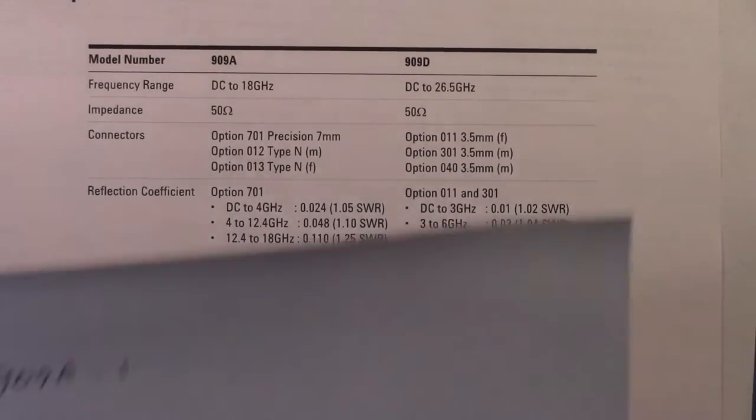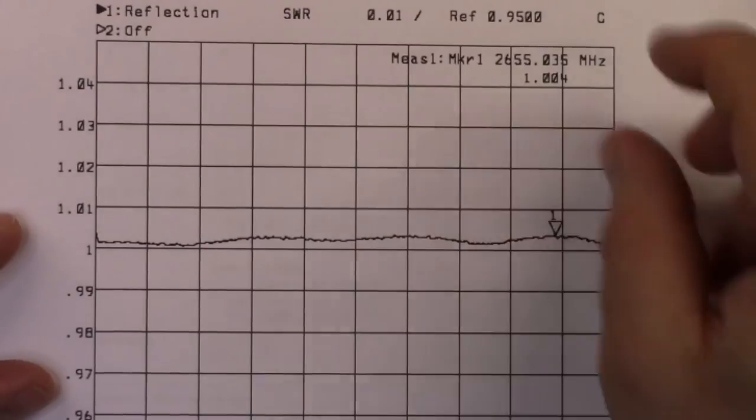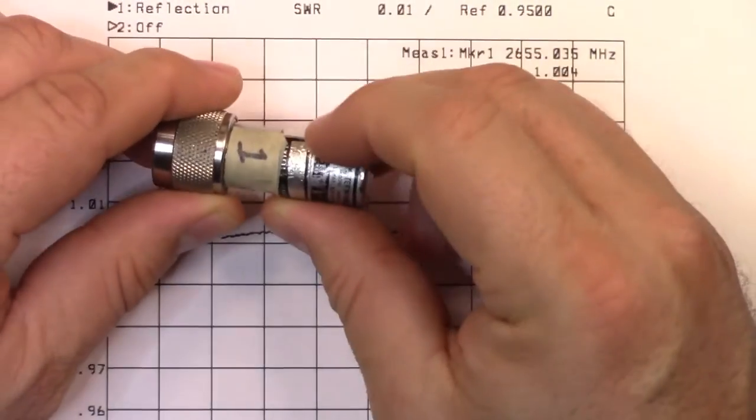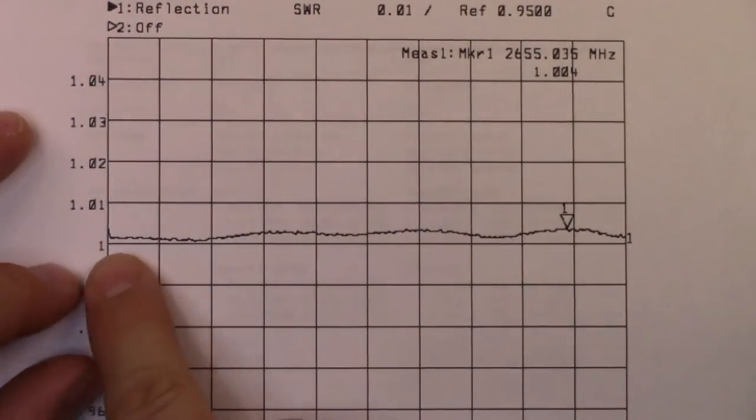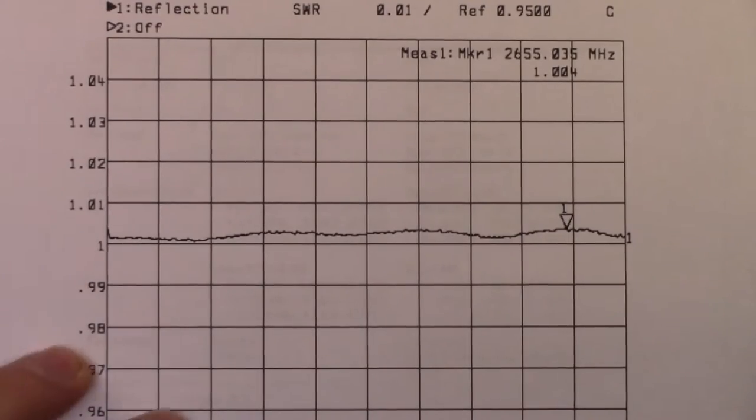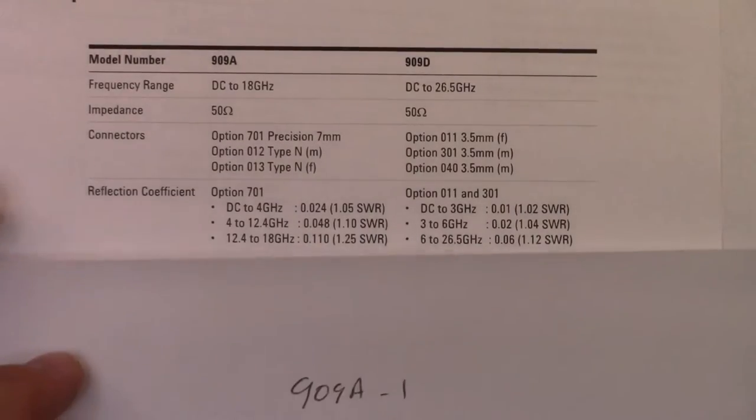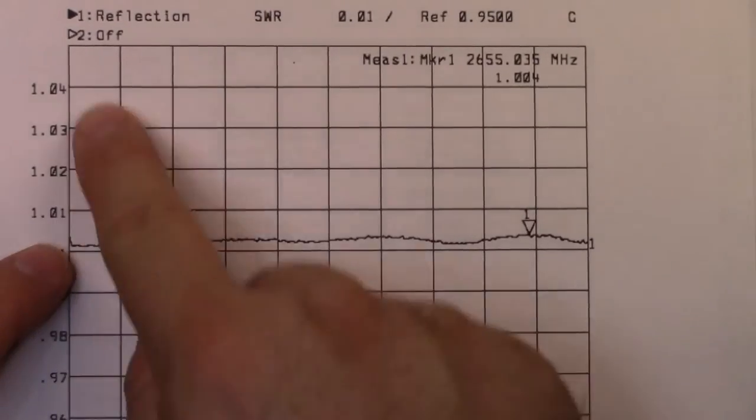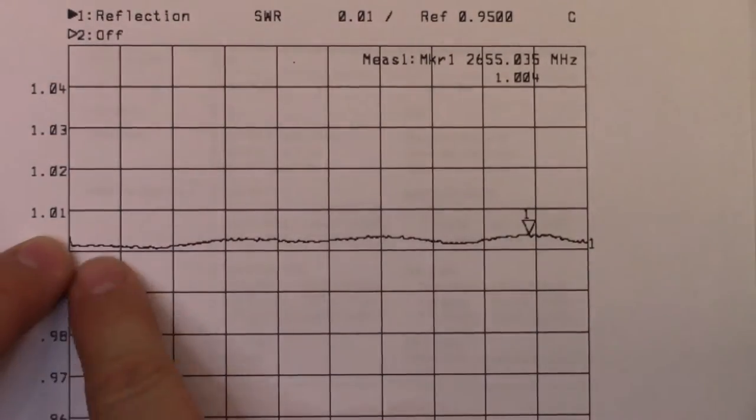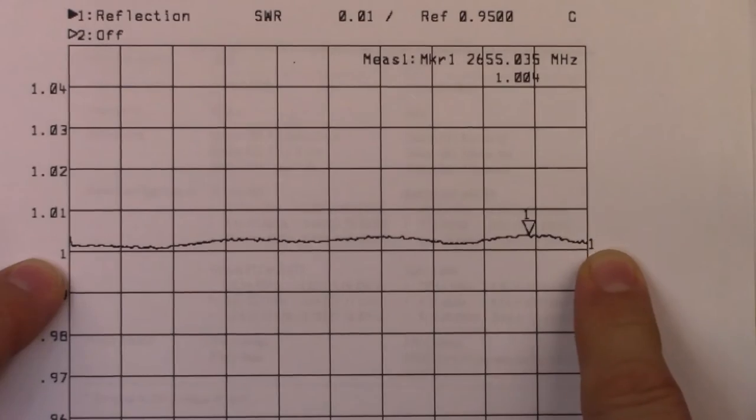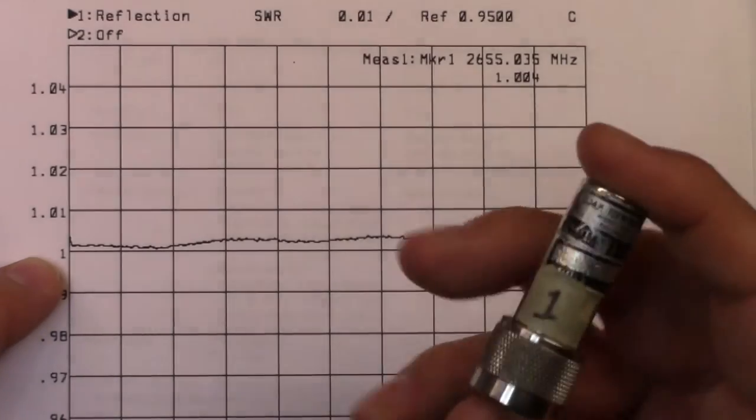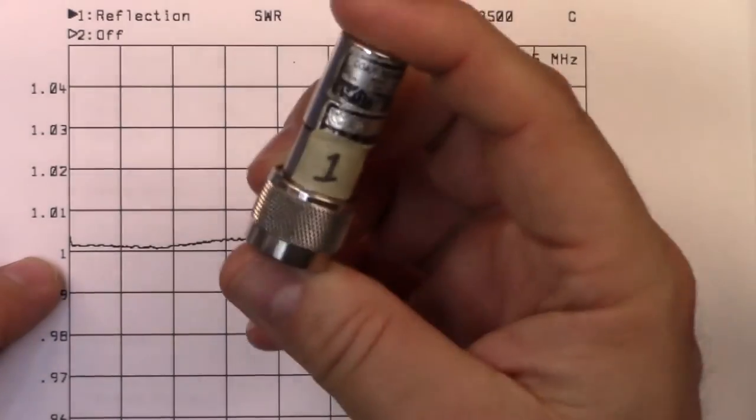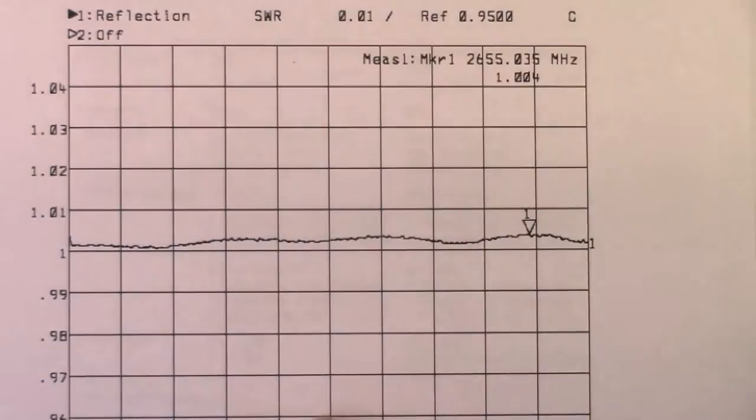This was the graph that I had for load 1, and you can see I should have been under 1.06. 1.06 is way the hell off the graph here, so basically up to 3 gigs this is pretty much spot-on.